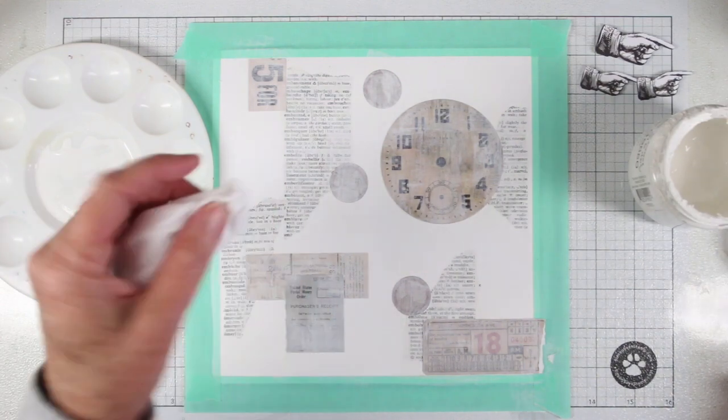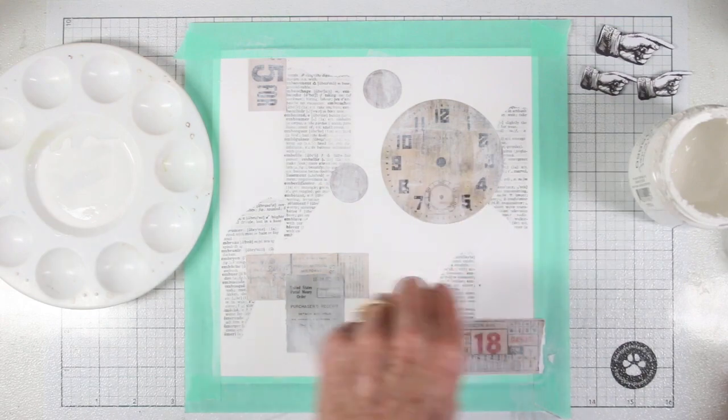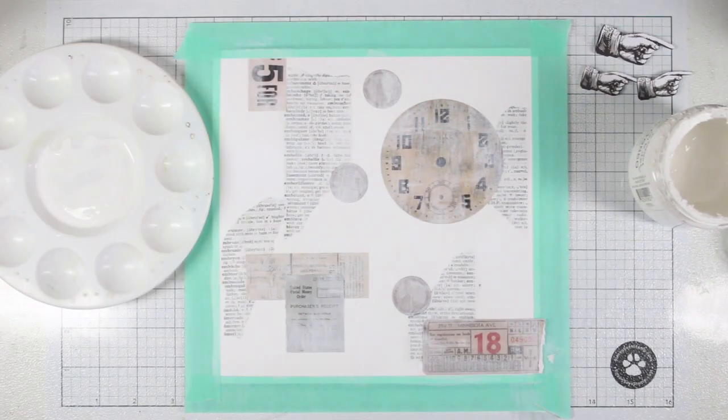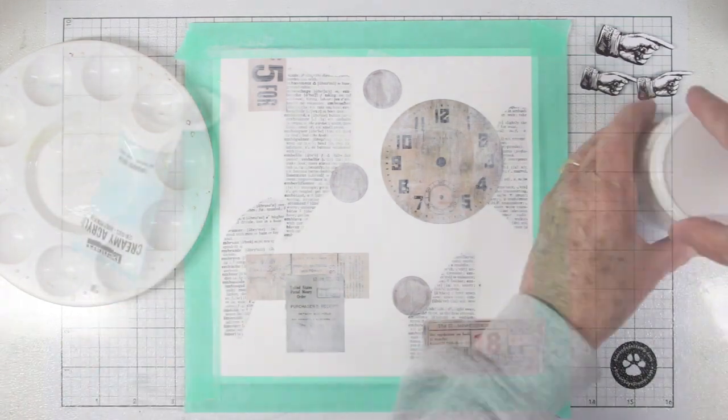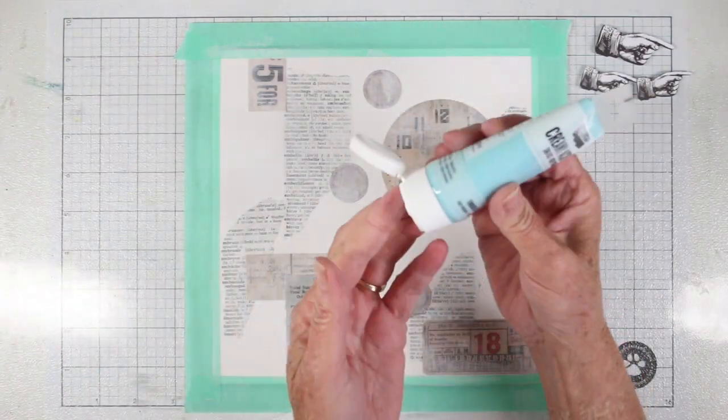If you get too much of your gesso onto your piece, you can go back over with a baby wipe while it's still wet and wipe some of that away. By diluting your gesso down, you don't cover up everything completely.